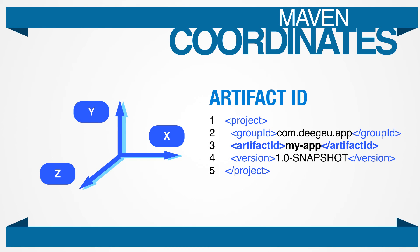The artifact ID is the name of the project. When you compile, the artifact ID usually determines the name of your compiled jar or war, without the version. The name can be anything you like — all lowercase letters and no strange symbols.